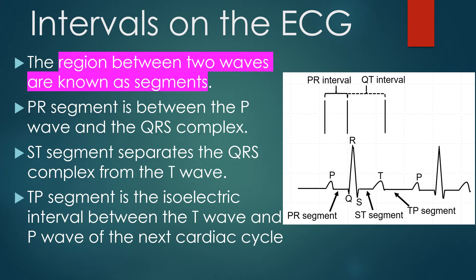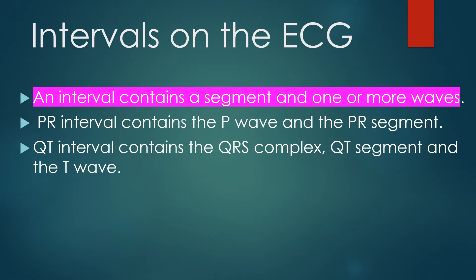The region between two waves is known as a segment. The PR segment is between the P wave and the QRS complex. The ST segment separates the QRS complex from the T wave. The TP segment is the isoelectric interval between the T wave and the P wave of the next cardiac cycle. An interval contains a segment and one or more waves. The PR interval contains the P wave and the PR segment. The QT interval contains the QRS complex, ST segment, and the T wave.